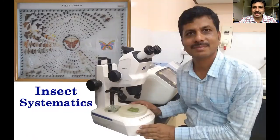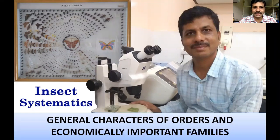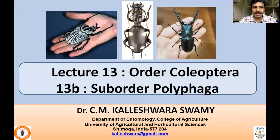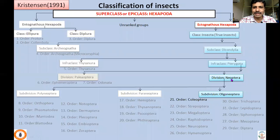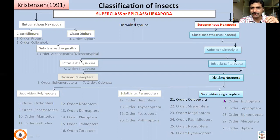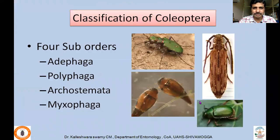Welcome back to the Insect Systematics lecture series. In the previous class, lecture 13, we started discussion on the order Coleoptera. In this lecture, 13b, I'll be talking about suborder Polyphaga. Under the division Neoptera there are three subdivisions: Polyneoptera (exopterygote insects with biting and chewing mouthparts), Paraneoptera (exopterygote with piercing and sucking mouthparts), and Oligoneoptera (endopterygote insects with complete metamorphosis, four stages).